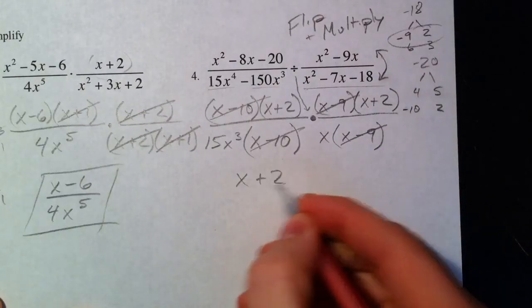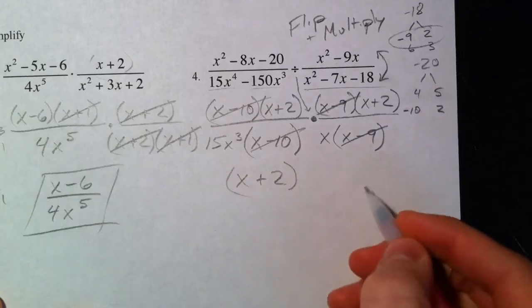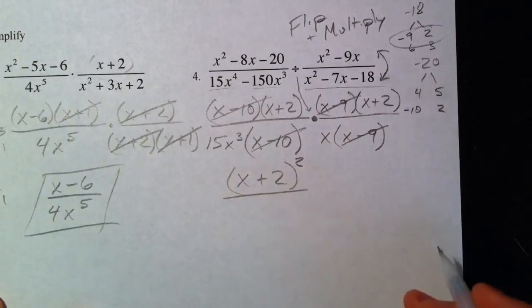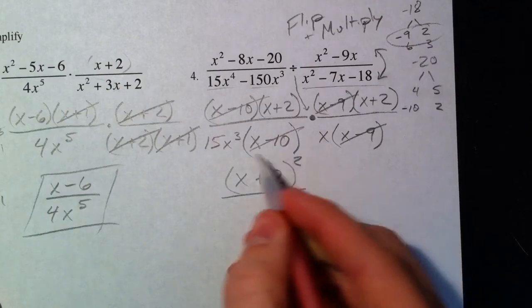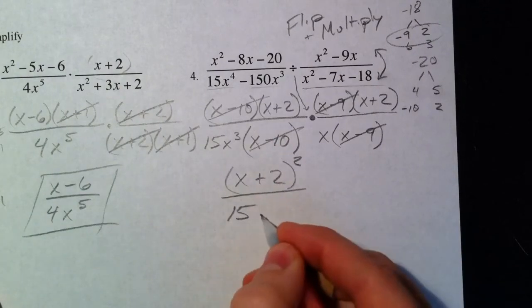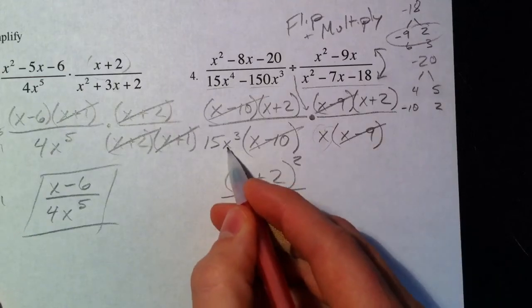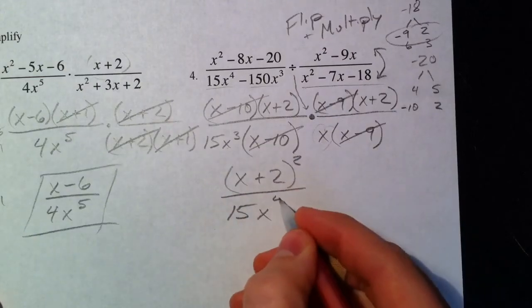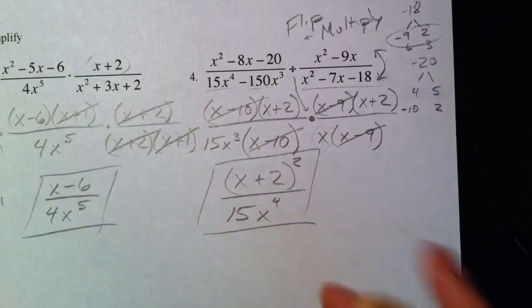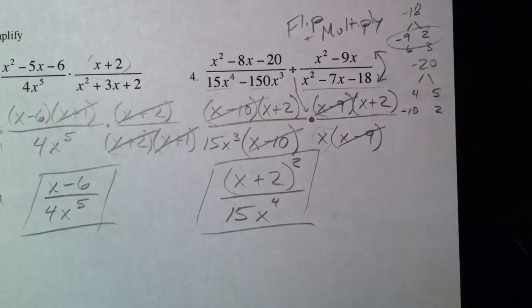So we get X plus 2—you can write X plus 2, X plus 2, or I'm going to write X plus 2 squared to save some time because there's two of them. We get 15X, and then don't forget about this X over here. X to the third and another X make X to the fourth.